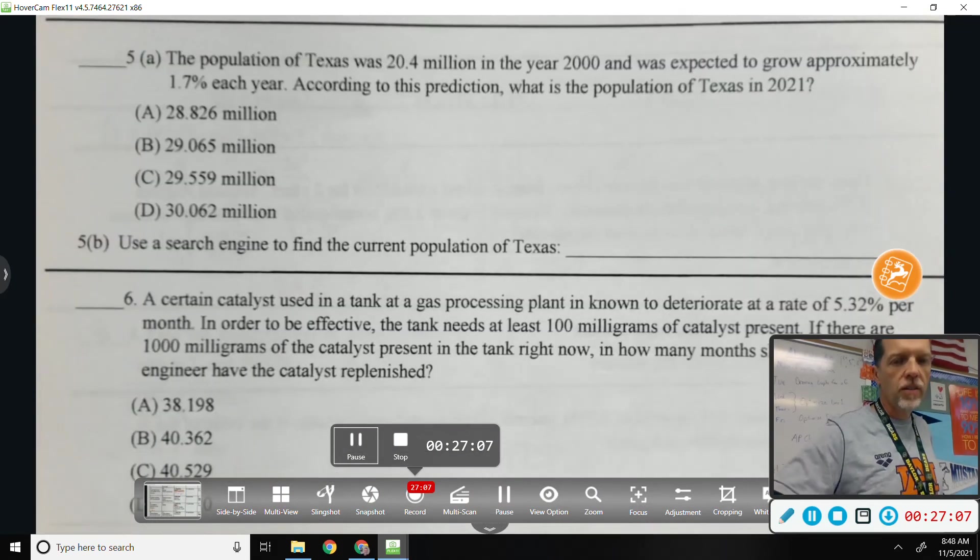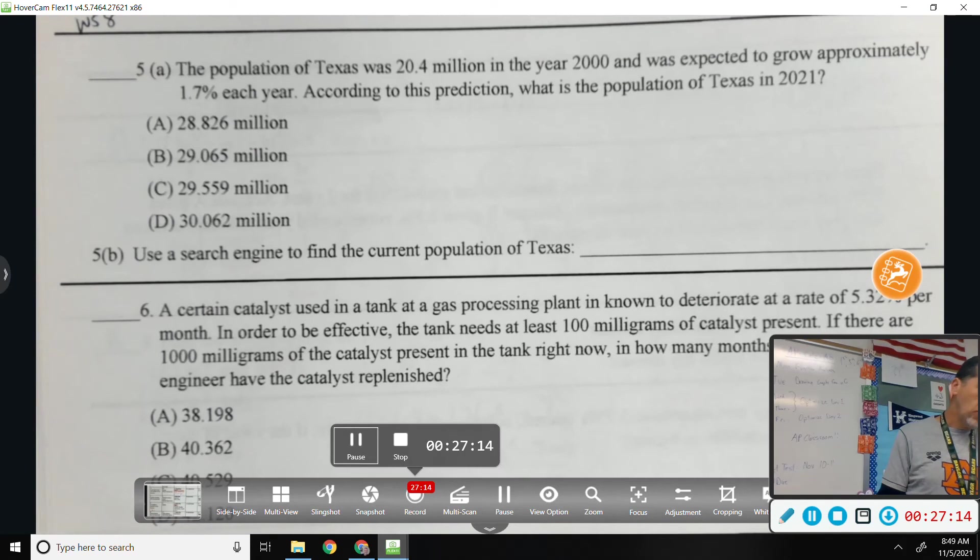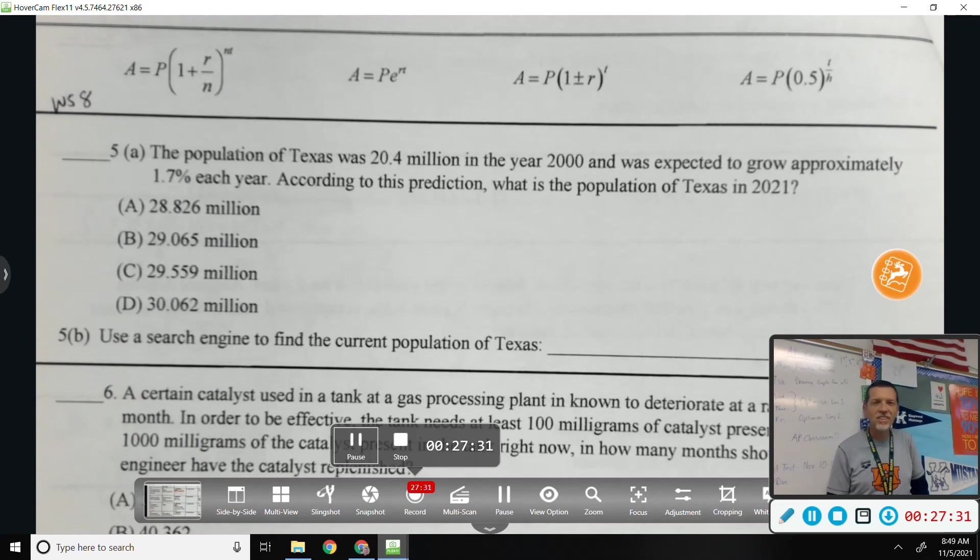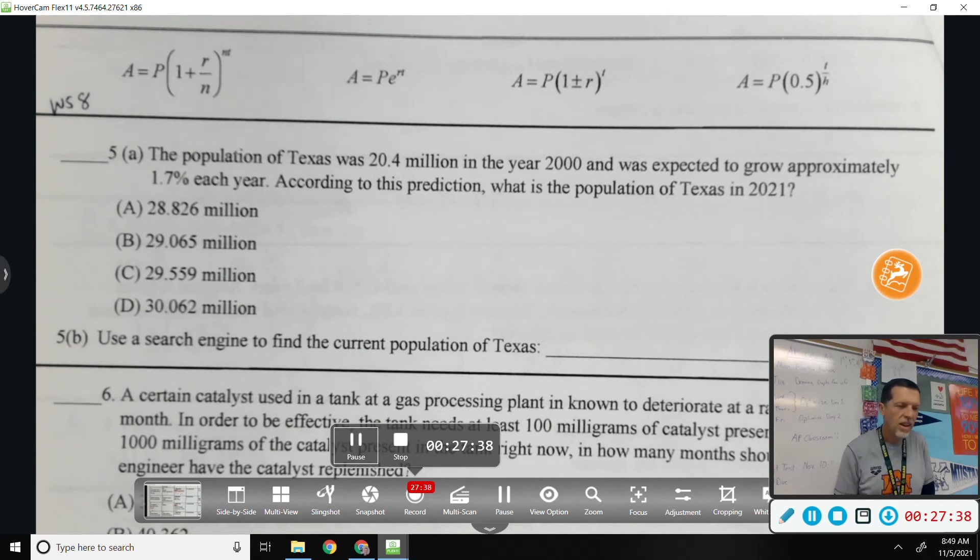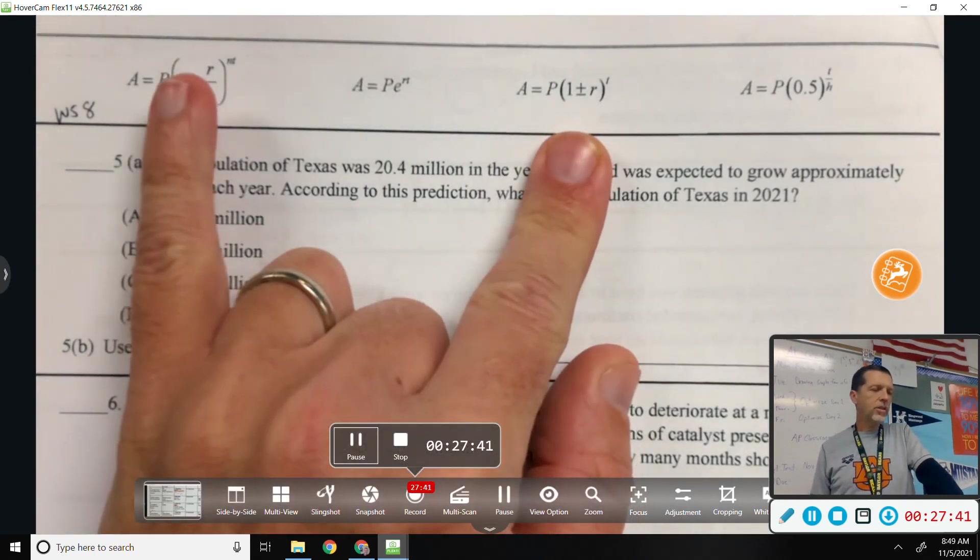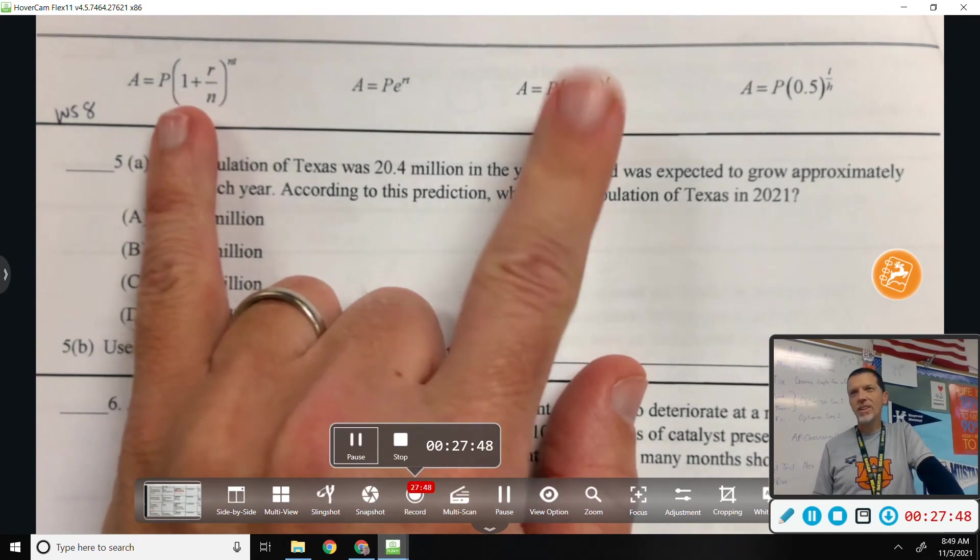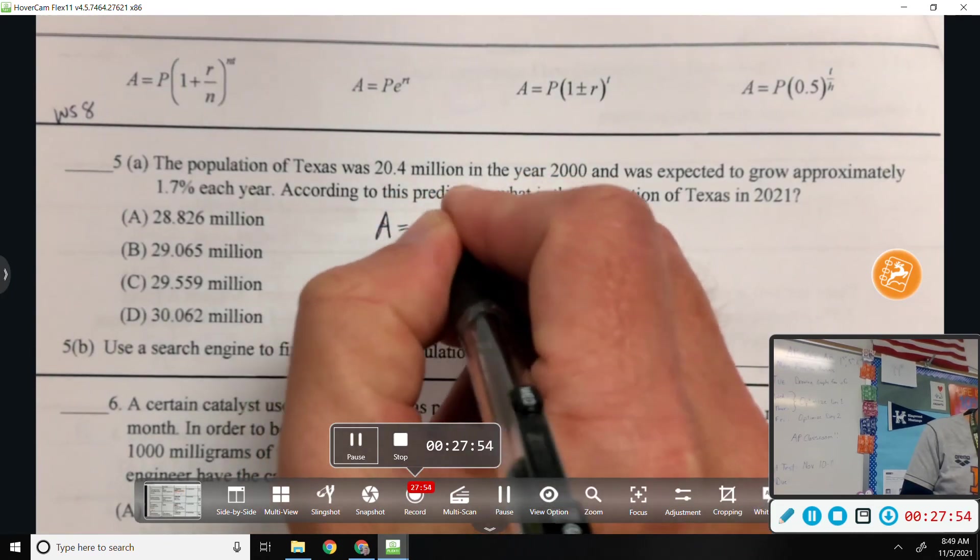So number 5 from worksheet 8. The population of Texas was 20.4 million in the year 2000. It was expected to grow approximately 1.7% each year. According to this prediction, what is the population of Texas in 2021? Well, first question would be which equation is this? I would say the third. You could argue that it's the first with n equals 1, but if n is 1, the first and the third are the same equation. Breaking news there. And we're growing, so we'll use the plus.